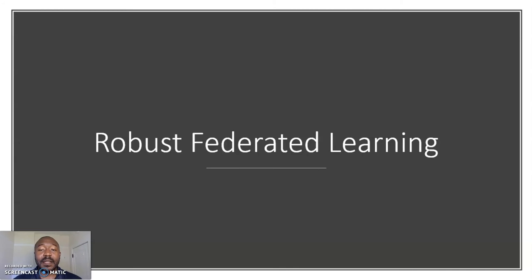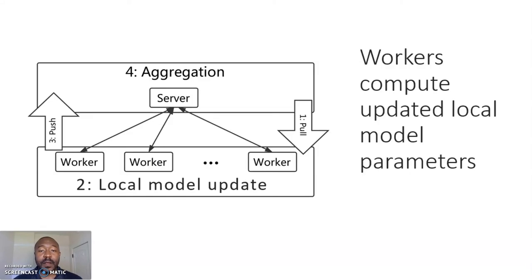Next, I will outline robust federated learning, shifting gears from distributed learning. Here, once again, we'll focus on the centralized model. So, once again, the workers pull models from the server, compute full model updates with multiple iterations, and then push these updates to the server for aggregation.